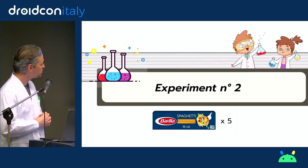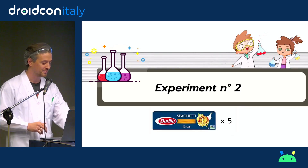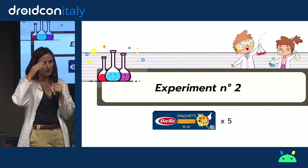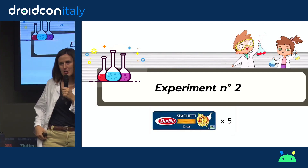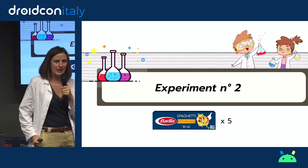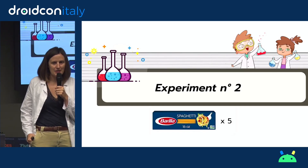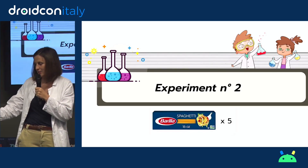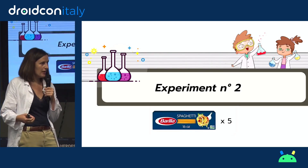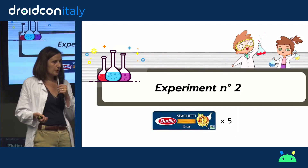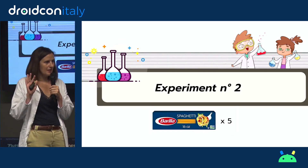We told you we were going to do some experimentation, so now we need a volunteer to come up on stage. We developed a small shopping app which, as you might think, is not accessible. The goal of this person is just to add five boxes of spaghetti to the basket.